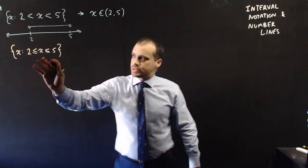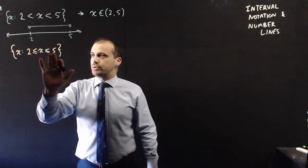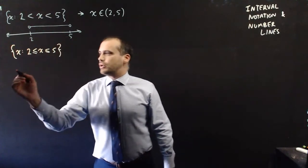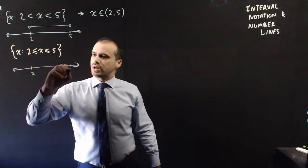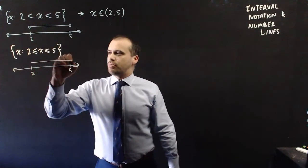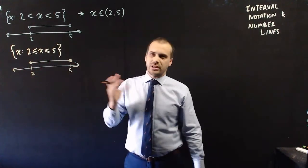But what if we had something like this, where x was between 2 and 5, but including 2 and 5? Well, on our number line, that's pretty straightforward. Same sort of number line, 2 and 5, and a line from there to there, but a colored in circle and a colored in circle. So on our number line, that's fine.